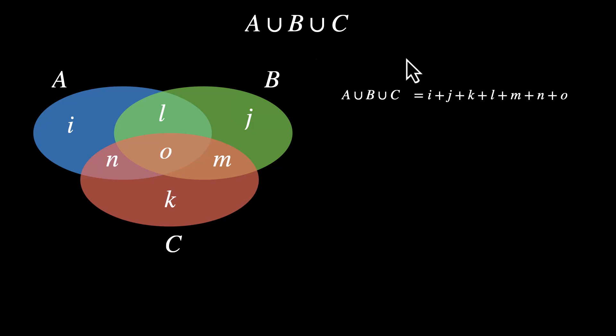Now for us to derive the formula, we have to convert these regions I to O into things that we are familiar with. We have to convert this in the form of A, B or C or their intersections. Now pause the video if you want to try this on your own.